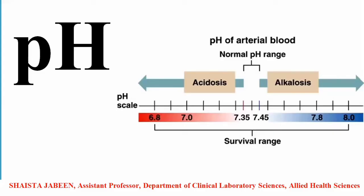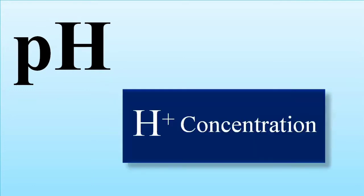This video is about pH, most specifically the pH of the arterial blood of humans. pH is related to the physiology of the human body. pH is the concentration of the hydrogen ion, so the concentration of hydrogen ion represents the pH of the body.